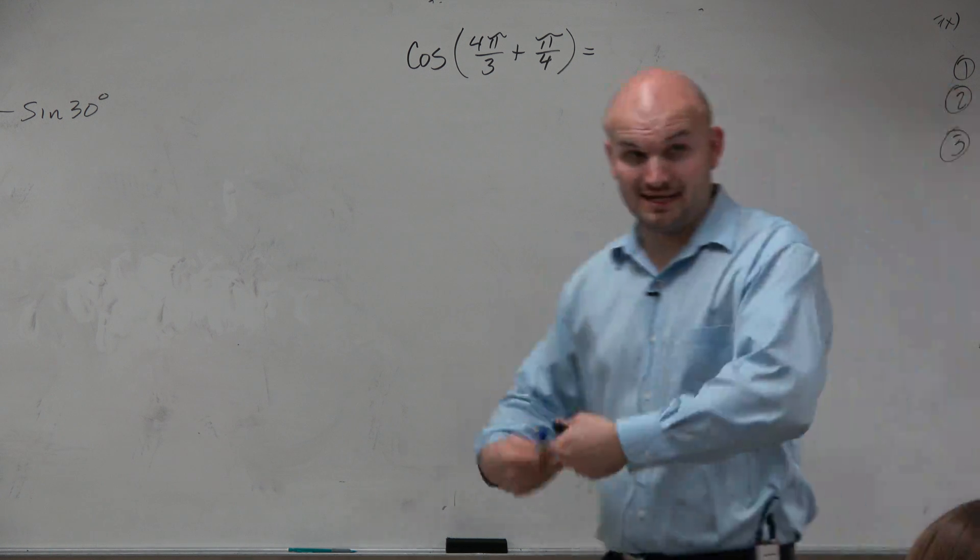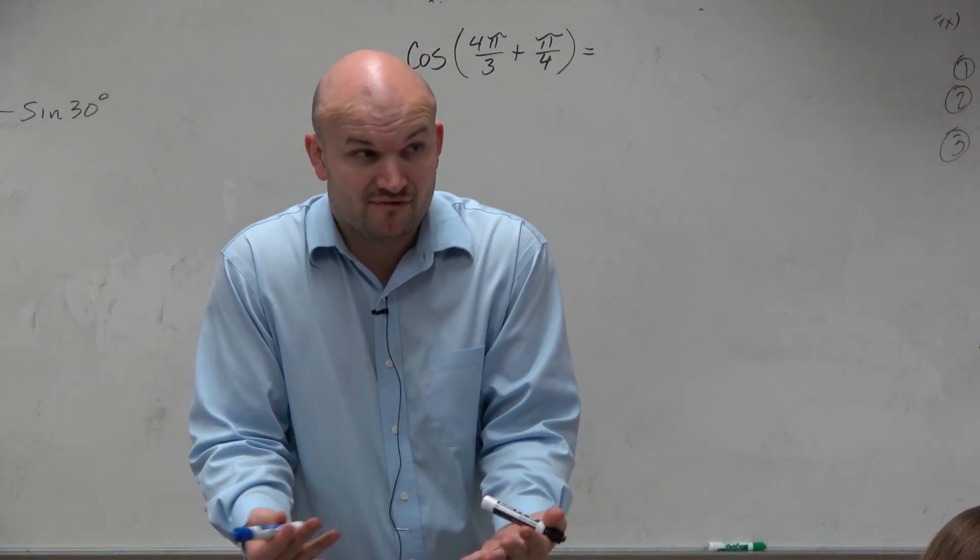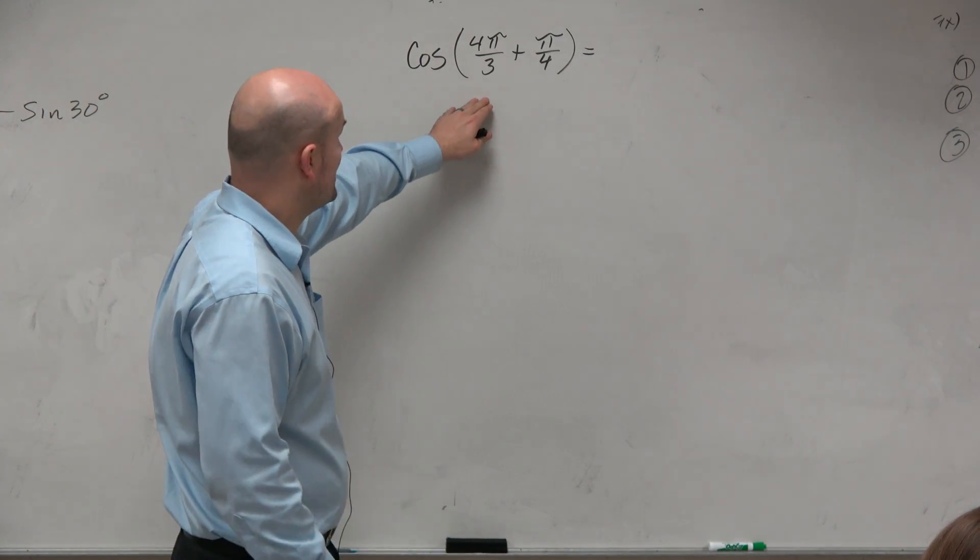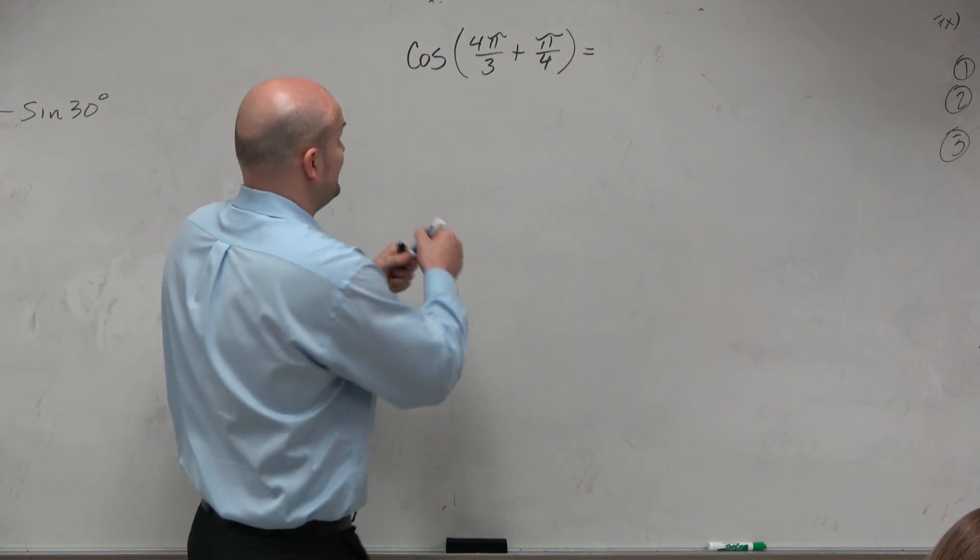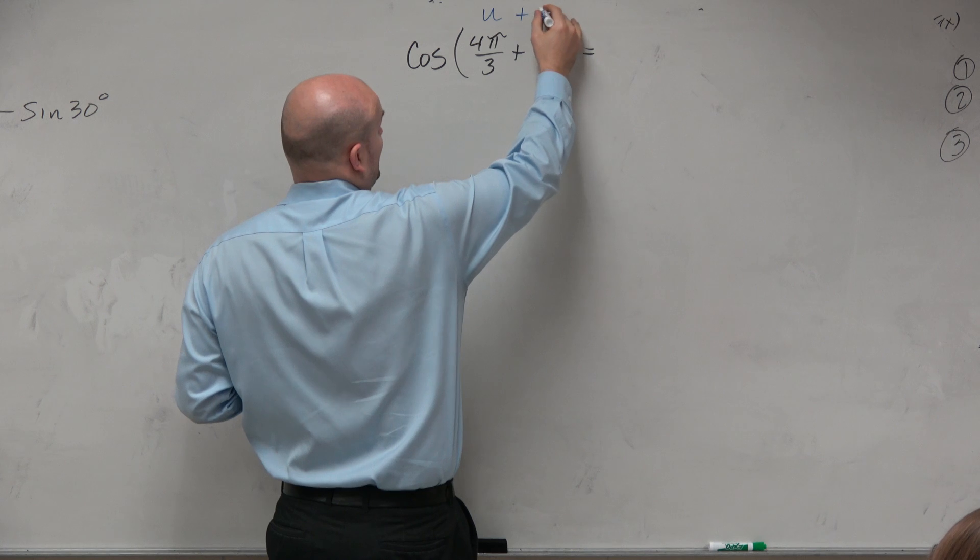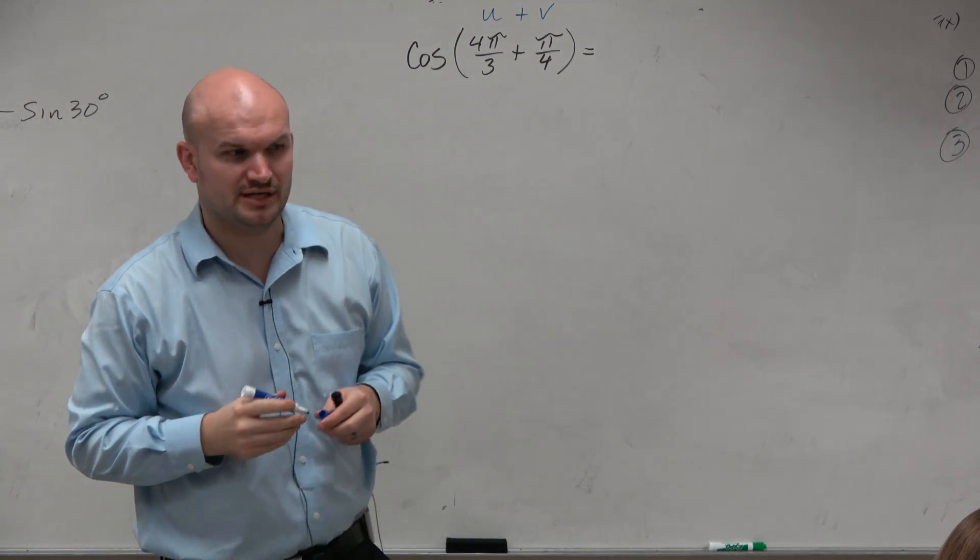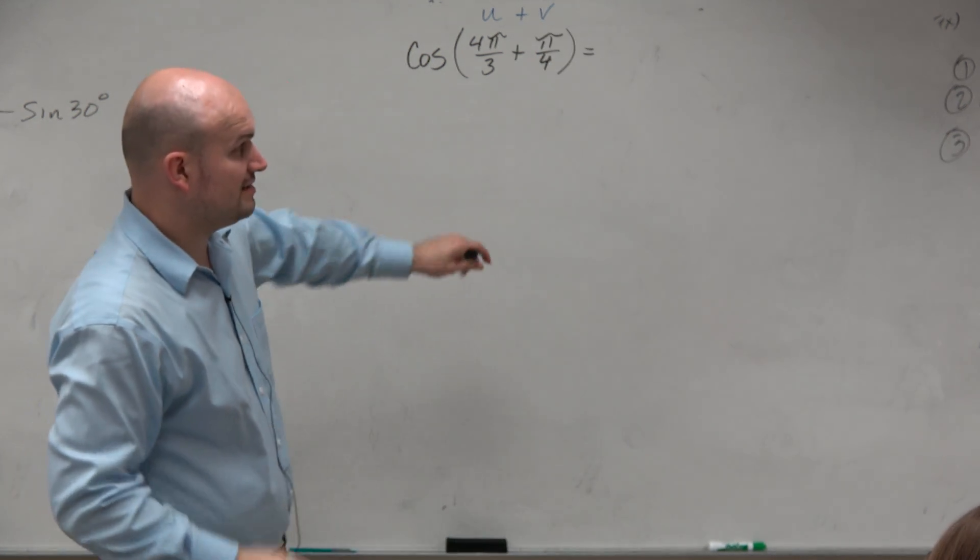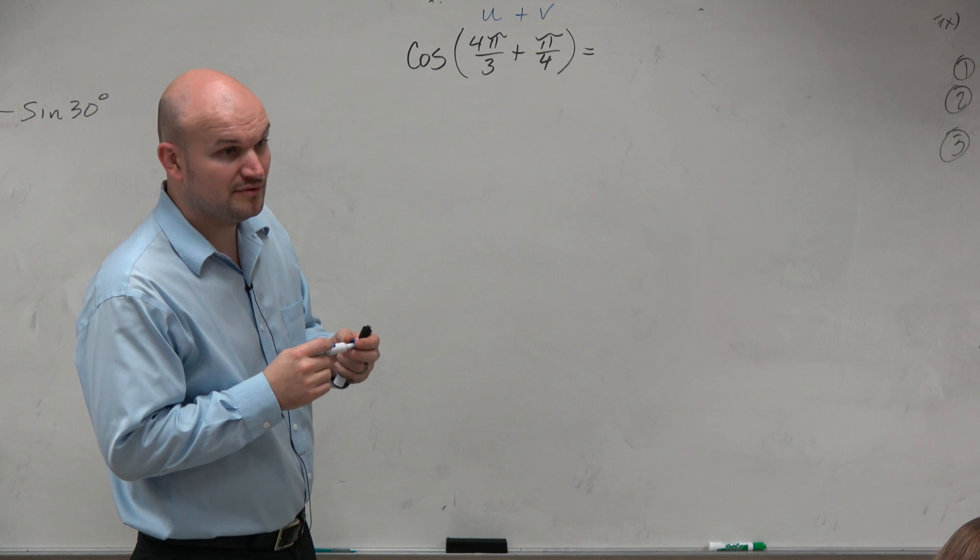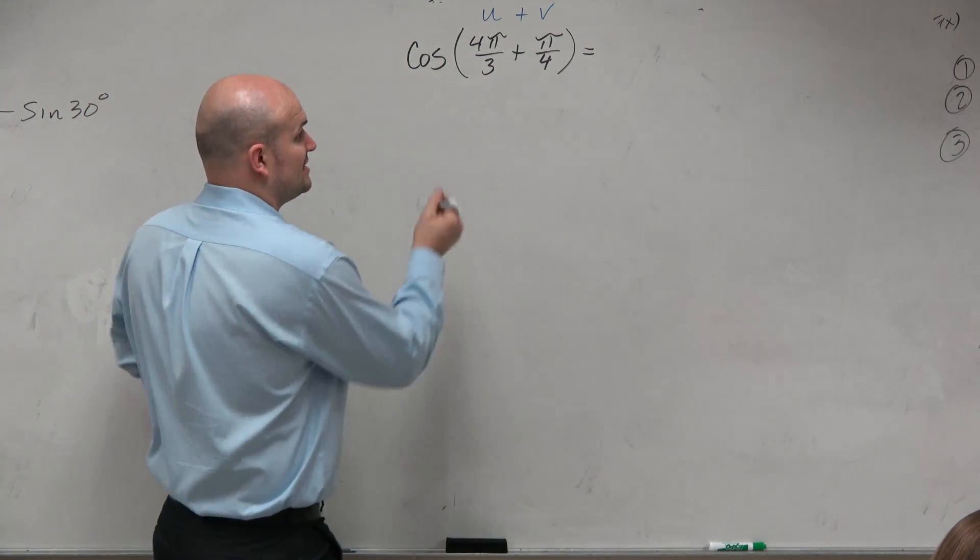So if I just apply my identity formula, I can say that the cosine of this u plus v - you don't need to always label your angles, but I think it's sometimes helpful, especially when you're getting started. So you label u and v, and then we're just going to plug them into this identity.